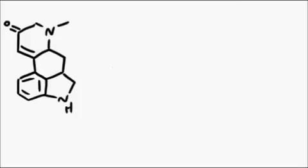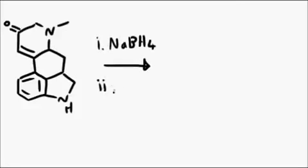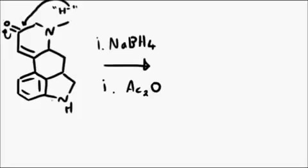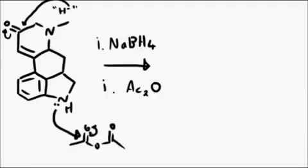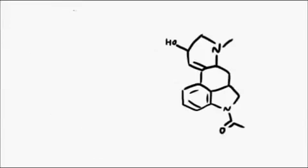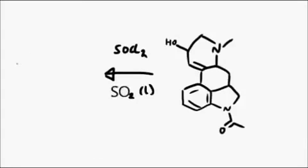Next, sodium borohydride and acetic anhydride are used. The first reagent reduces the ketone to an alcohol, and the second protects the nitrogen against the next reaction steps. Thionyl chloride is then used to convert the alcohol into a chloride, and the mechanism is pretty similar to the one seen previously.